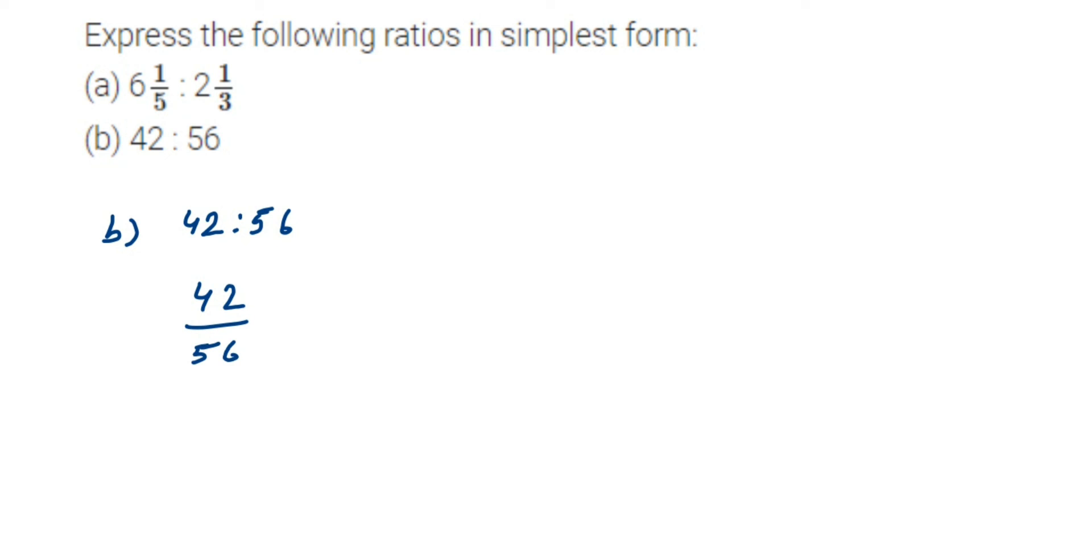You can cancel in the 2 times table, but let me cancel directly in the 14 times table. Both numbers are divisible by 14: 14×3=42 and 14×4=56. You could also cancel step by step in the 2 times table and get the same answer. This equals 3/4.